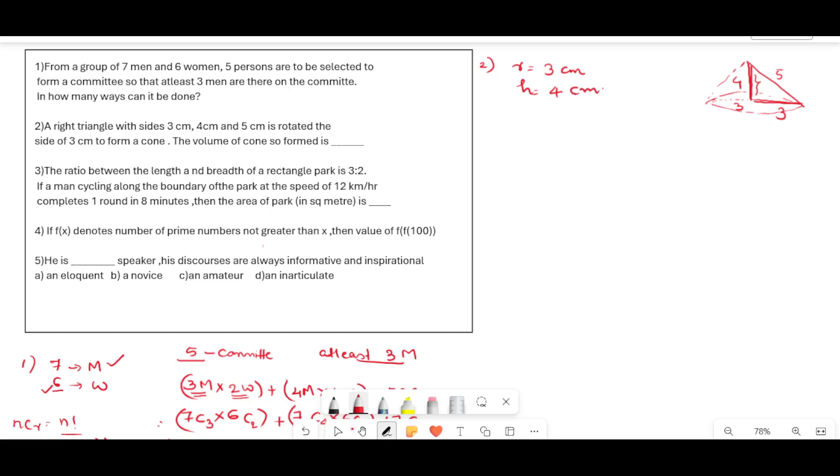Now we have to find the volume of the cone. What is volume of the cone? Volume of the cone is equal to 1/3 πr²h. That is equal to 1/3 π into r², 3² into h is 4. That is equal to 12π cm³. This is the final answer.